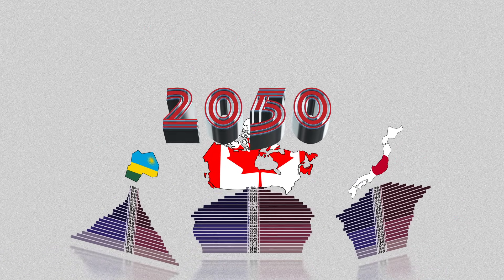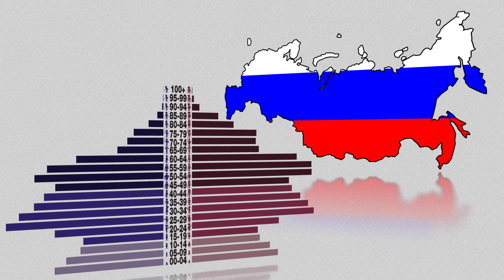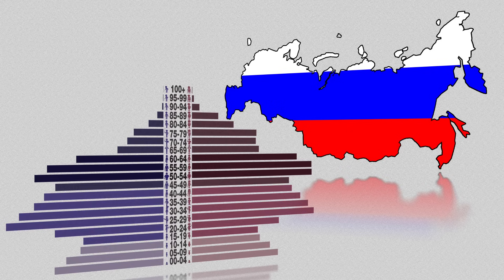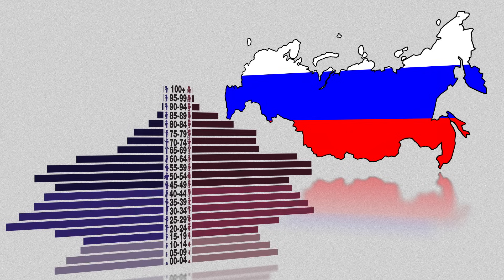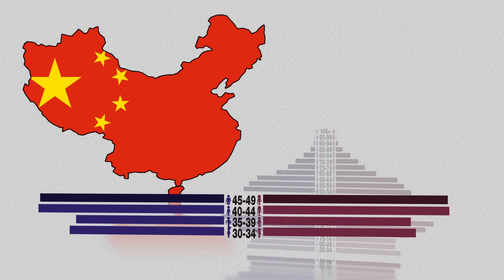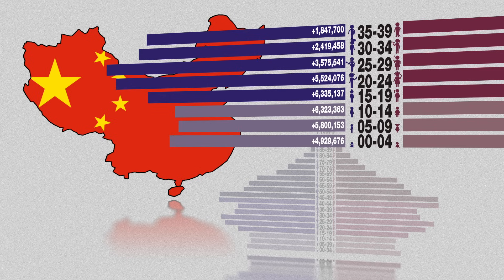A population pyramid can be useful not only as a predictor of a country's future, but as a record of its past. Russia's population pyramid still bears the scars of World War II, which explains both the fewer numbers of elderly men compared to elderly women, and the relatively sudden population increase as soldiers returned from the war and normal life resumed. China's population pyramid reflects the establishment of the one-child policy 35 years before, which prevented a population boom such as that of Rwanda, but also led to sex-selective abortions, resulting in more male children than female children.